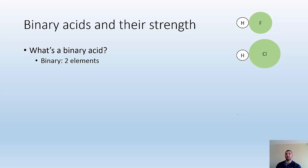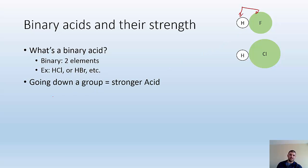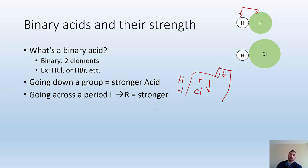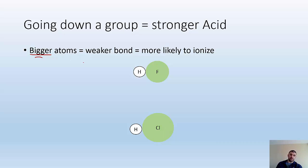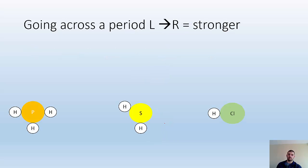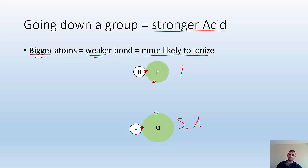Binary acids and their strengths — two elements, hydrogen and something else, like HCl, HBr, HF. As we go down a group on the periodic table, we get stronger acids. As we go down the group, the atoms get bigger. Bigger atoms have weaker bonds. Weaker bonds means it's more likely to ionize, which means a stronger acid. So HF is smaller than HCl, which means HF is probably going to hold on to that hydrogen more strongly — HCl will be a stronger acid and HF a weaker acid.